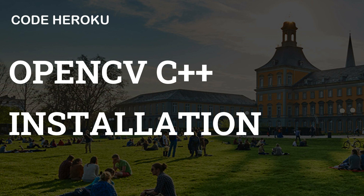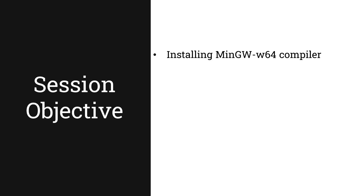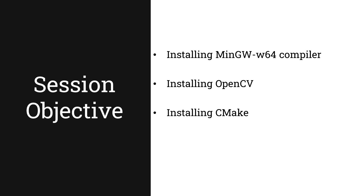In today's video, we will be going over OpenCV installation for C++ with MinGW compiler for creating OpenCV programs in C++. We will be learning how to install the MinGW 64-bit compiler for running C++ programs, then how to install OpenCV, and then how to install CMake. We require CMake to link the OpenCV libraries with the MinGW compiler so as to run the OpenCV programs in C++.